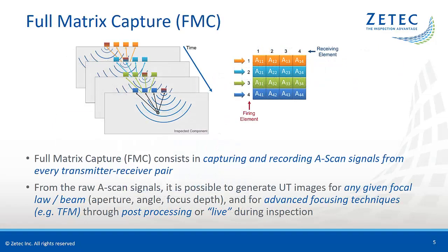With the full matrix capture, or FMC, technique, the elementary A-scan signals from every transmitter-receiver pair are captured and recorded. Like the image on this slide shows, the elements of the probe are pulsed one by one, and for each pulse the reflected signals are received on each element. At the end of the sequence, for a probe with four elements, a matrix of 16 A-scan signals is recorded. For a more realistic situation — a probe with 64 elements — we will have a matrix of 4096 A-scans.